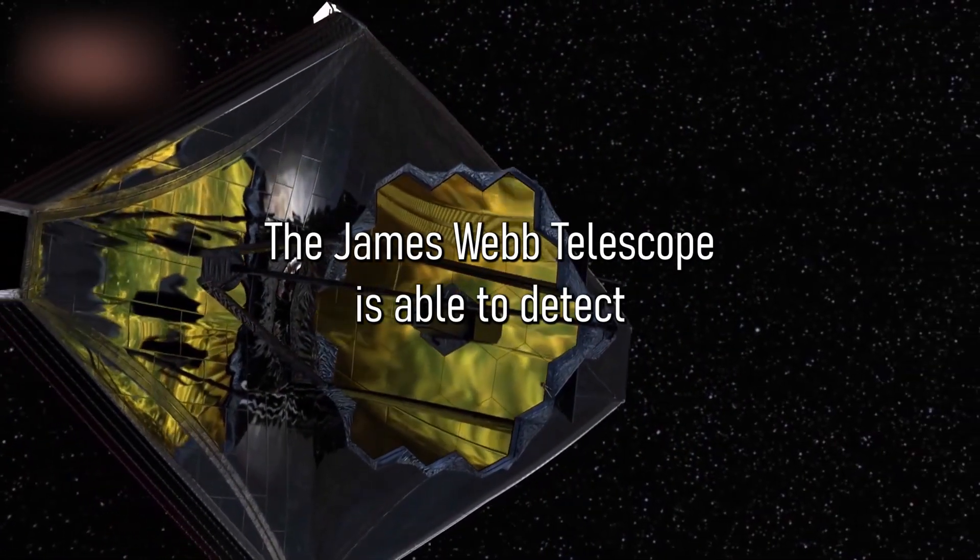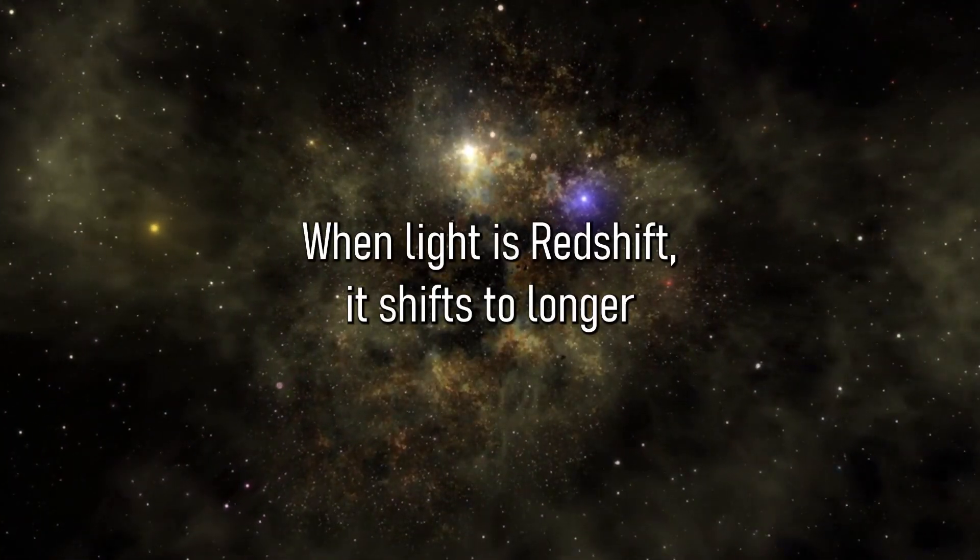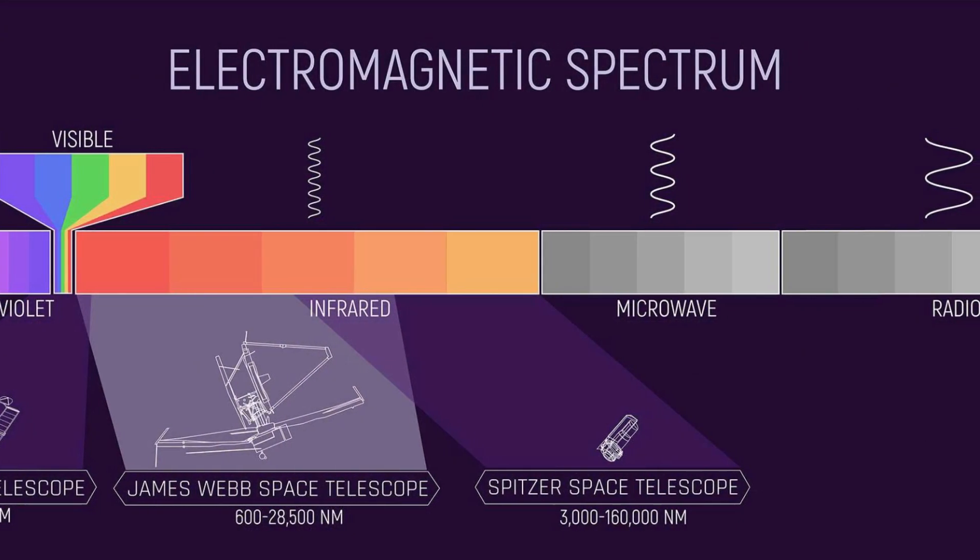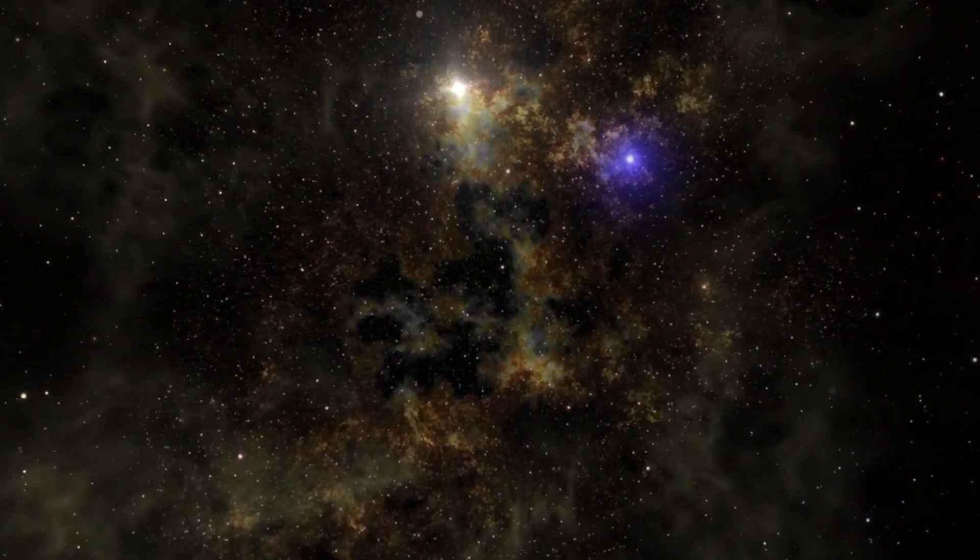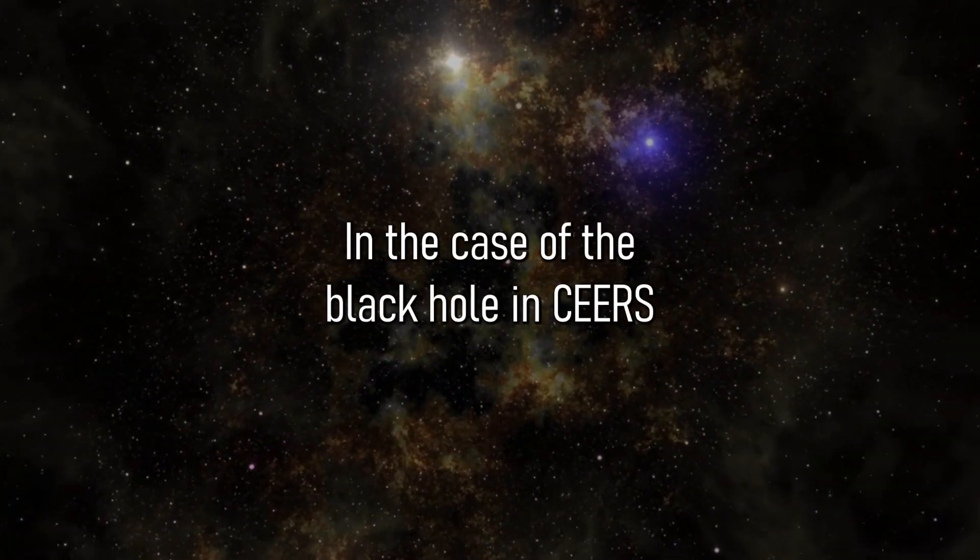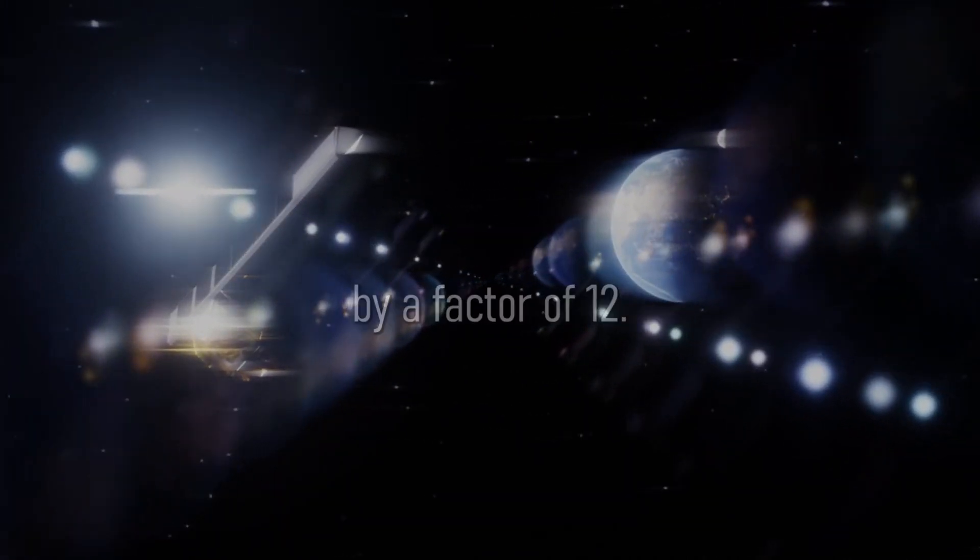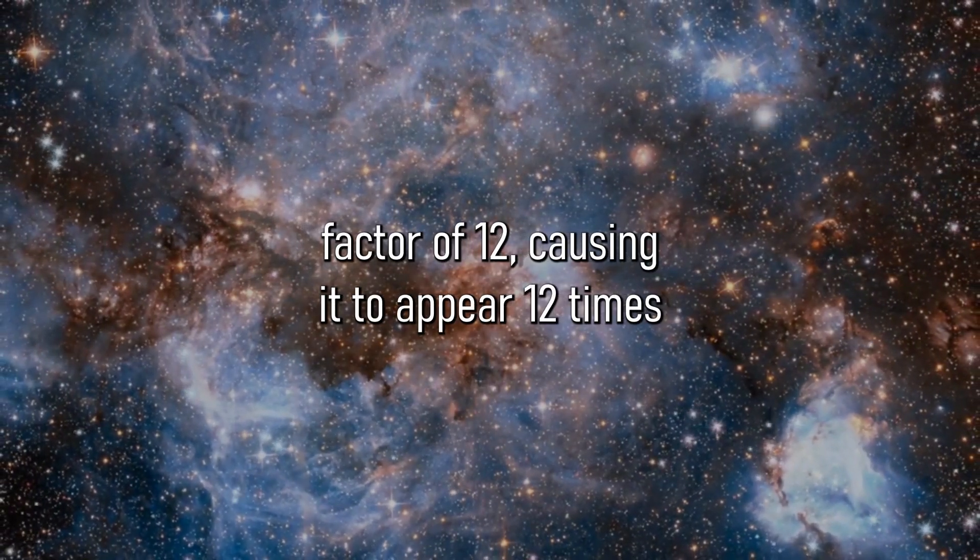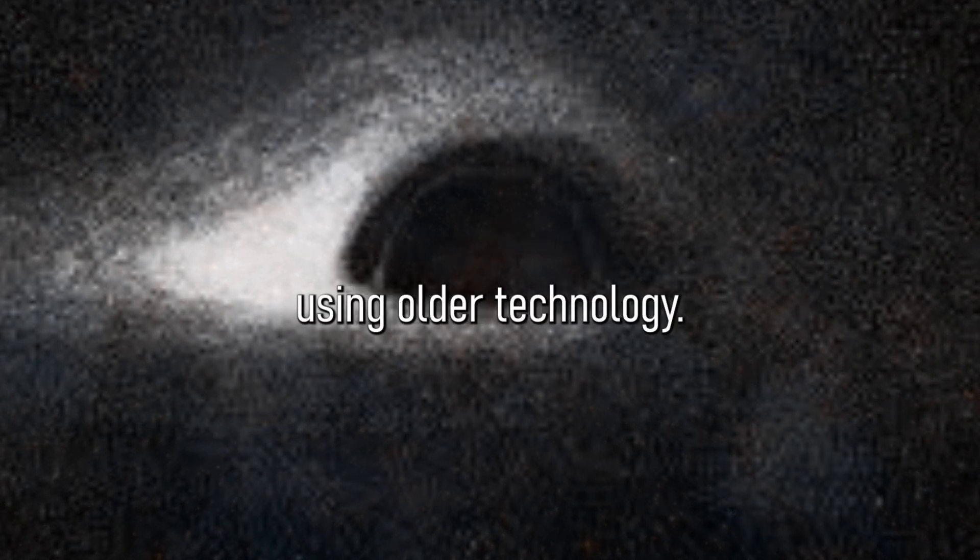The James Webb Telescope is able to detect redshift by using its infrared capabilities. When light is redshifted, it shifts to longer wavelengths, which are in the infrared spectrum. This allows the James Webb Telescope to see objects that are too distant to be seen in visible light. In the case of the black hole in CEERS 1019, the infrared light from the black hole's accretion disk was redshifted by a factor of 12. This means that the light was stretched out by a factor of 12, causing it to appear 12 times redder than it would have if it were not redshifted. This would have been impossible to see using older technology.